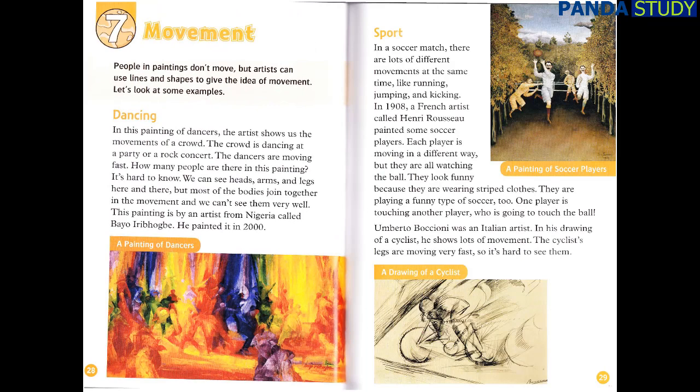Chapter 7: Movement. People in paintings don't move, but artists can use lines and shapes to give the idea of movement. Let's look at some examples. Dancing. In this painting of dancers, the artist shows us the movements of a crowd. The crowd is dancing at a party or a rock concert. The dancers are moving fast. How many people are there in this painting? It's hard to know. We can see heads, arms, and legs here and there, but most of the bodies join together in the movement, and we can't see them very well. This painting is by an artist from Nigeria called Bayo Errigbogbe. He painted it in 2000.